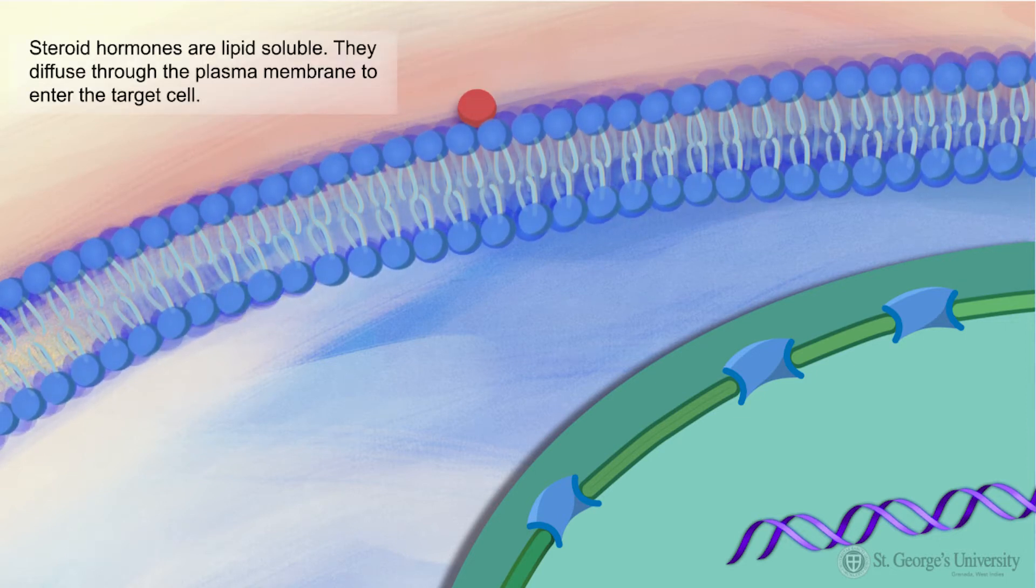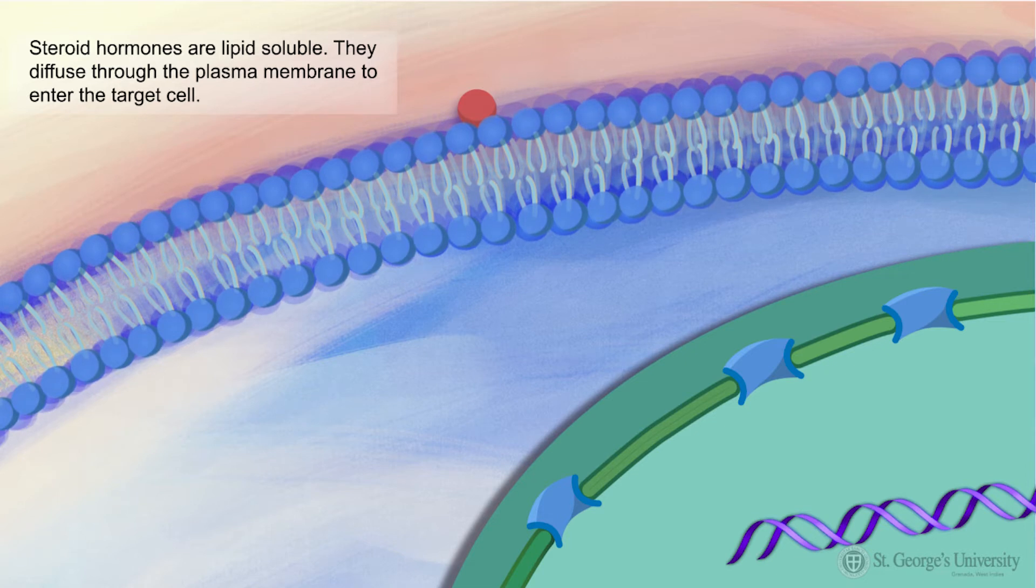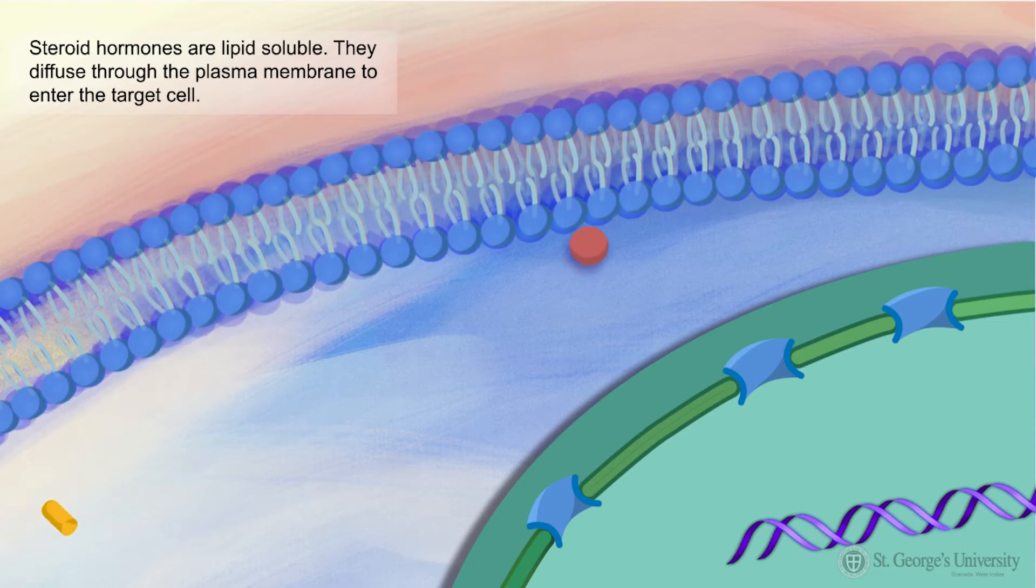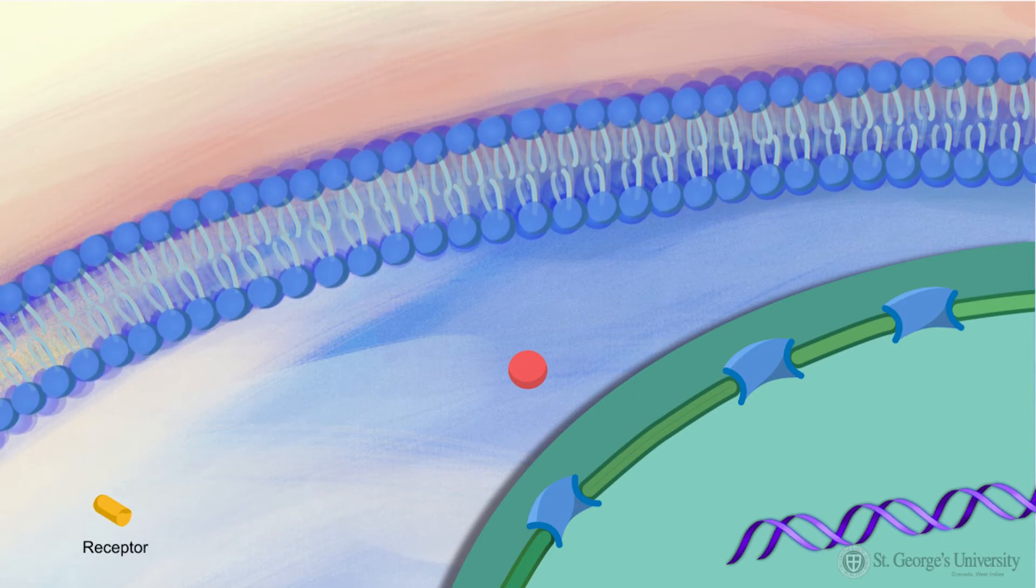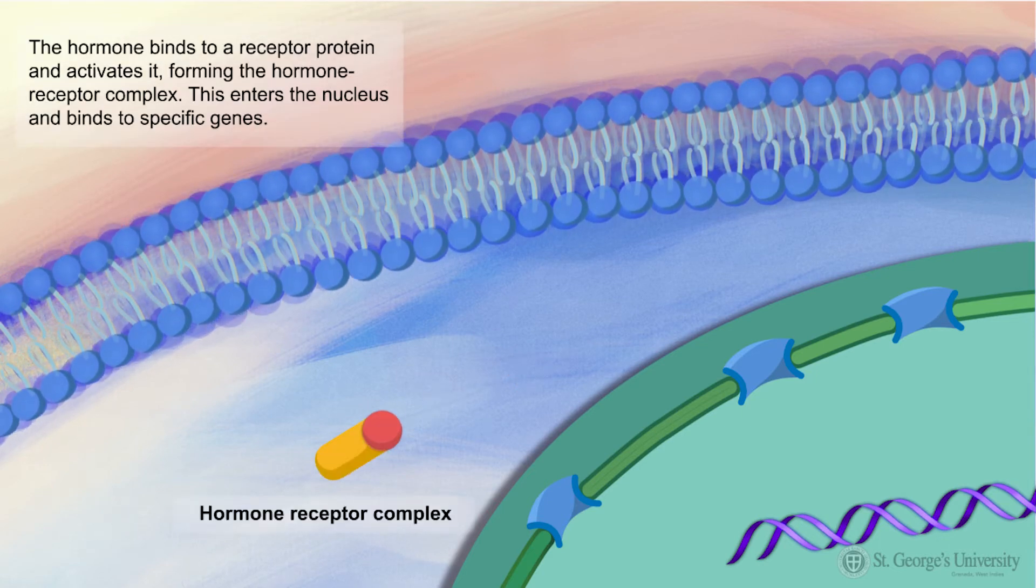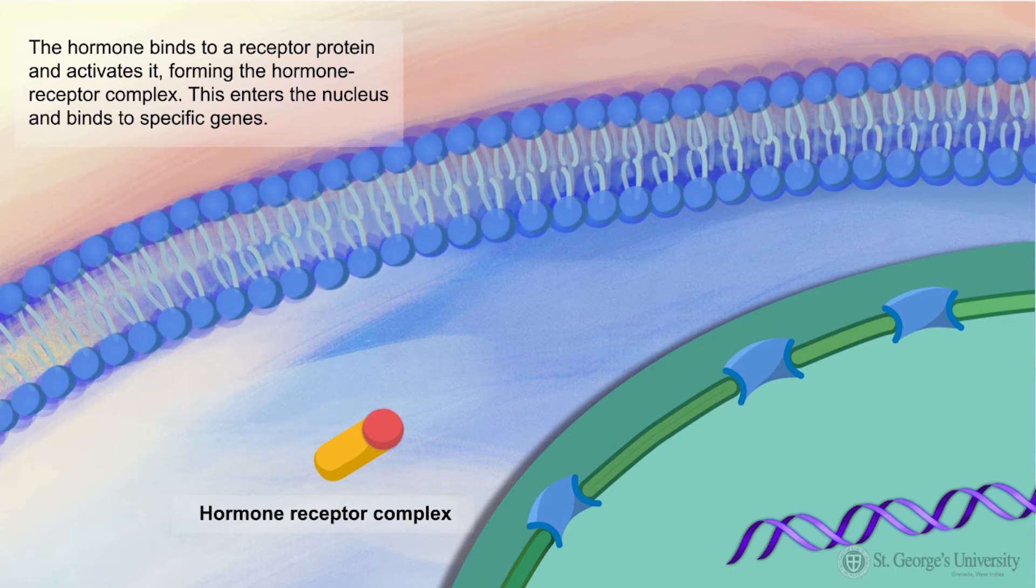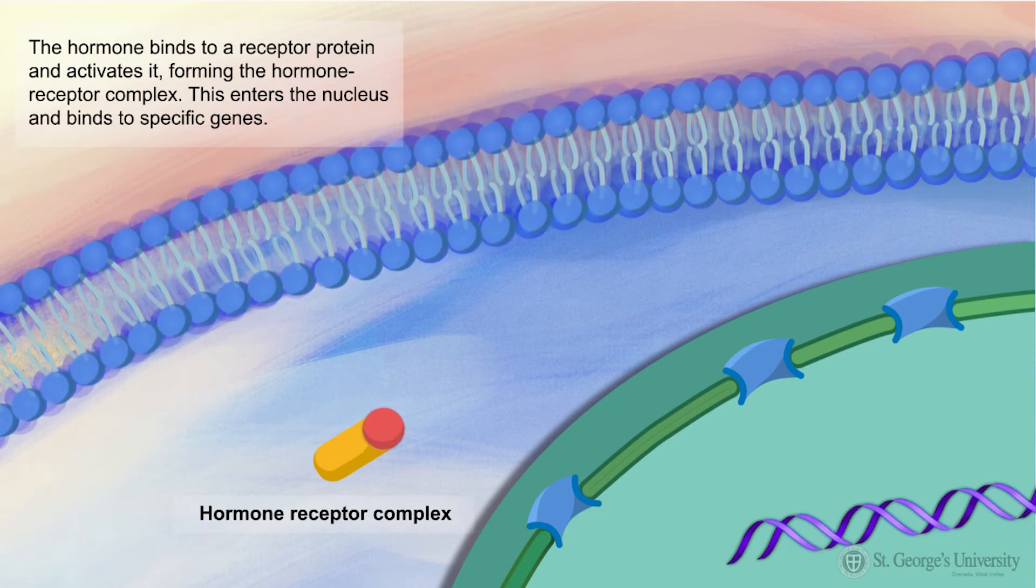Firstly, with steroid type or lipid soluble hormones, these diffuse through the plasma membrane to enter the target cell. The hormone binds to a receptor protein in the cytoplasm, activating it, forming a hormone receptor complex.